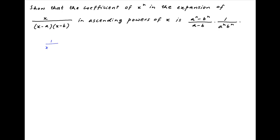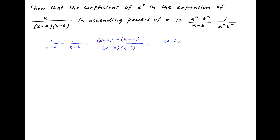We start by noting that 1 upon (x minus a) minus 1 upon (x minus b) is equal to (x minus b) minus (x minus a), divided by (x minus a)(x minus b). The x cancels in the numerator, and therefore this expression is equal to (a minus b) divided by (x minus a)(x minus b).